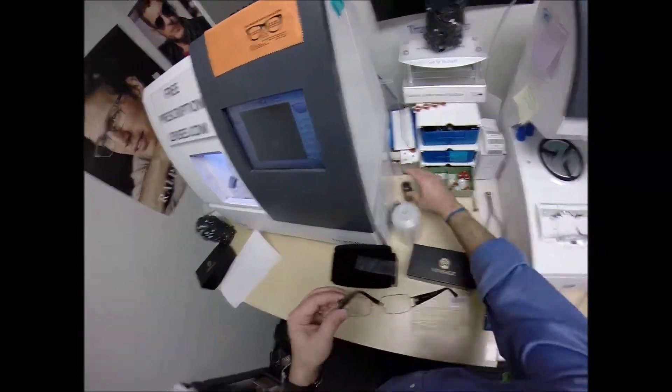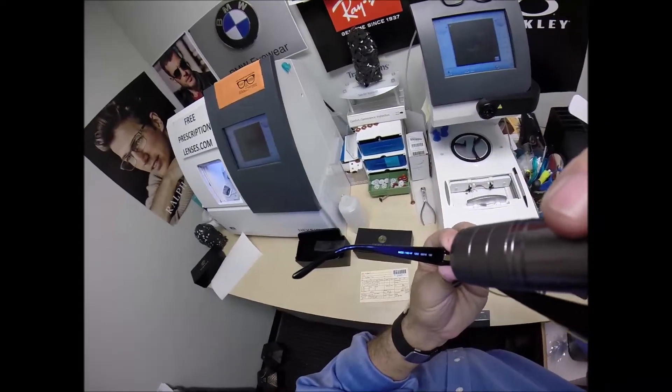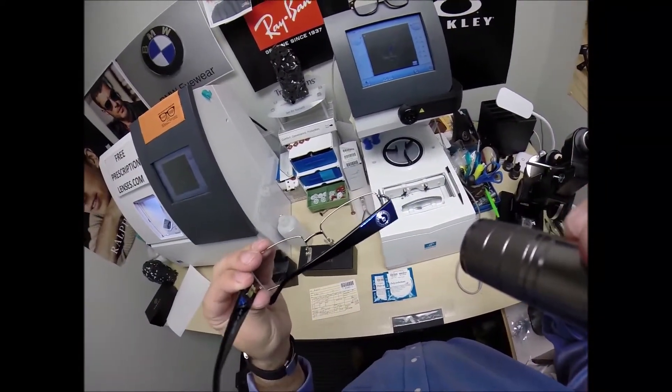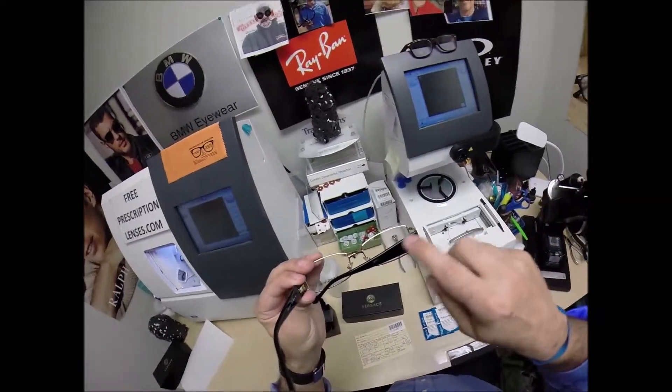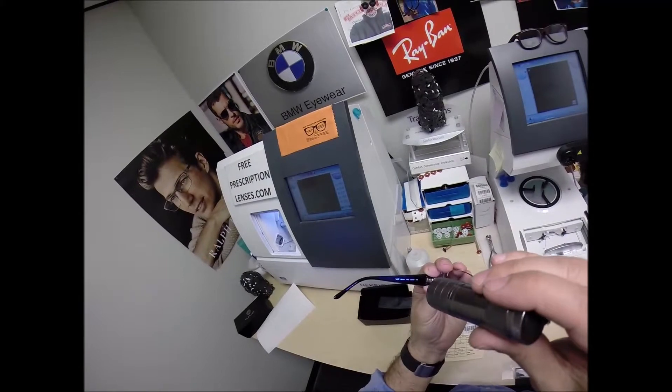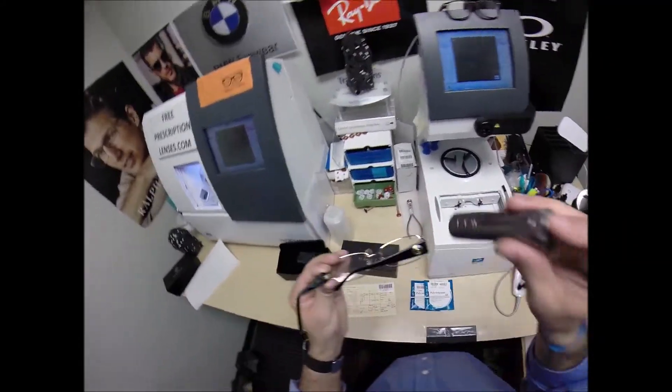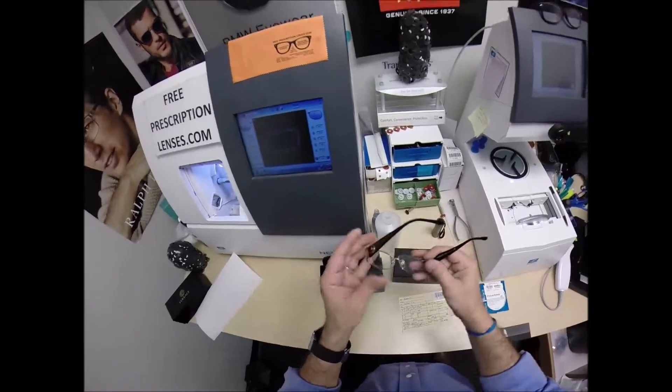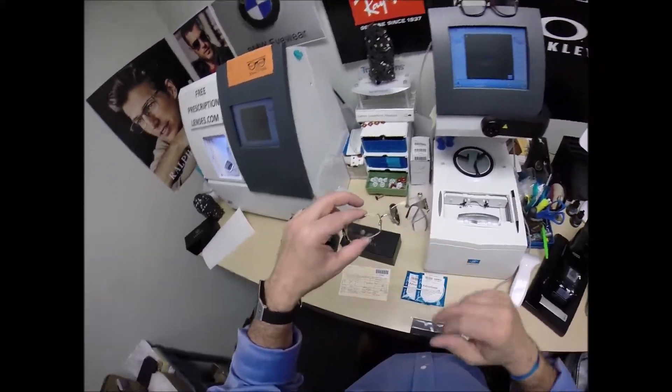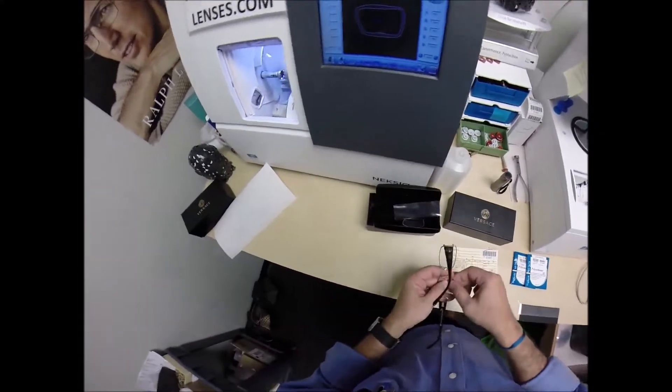This is the model number 1163M for medallion. There's also the 1163B, which has the Greco emblem all blinged out. This is M for medallion. And the color 1252, which is the pale gold and the 52 eye size. So let me begin. I'm going to pop out the original demo lenses, one of which says Versace. And of course you're going to receive all the manufacturer's original packaging.